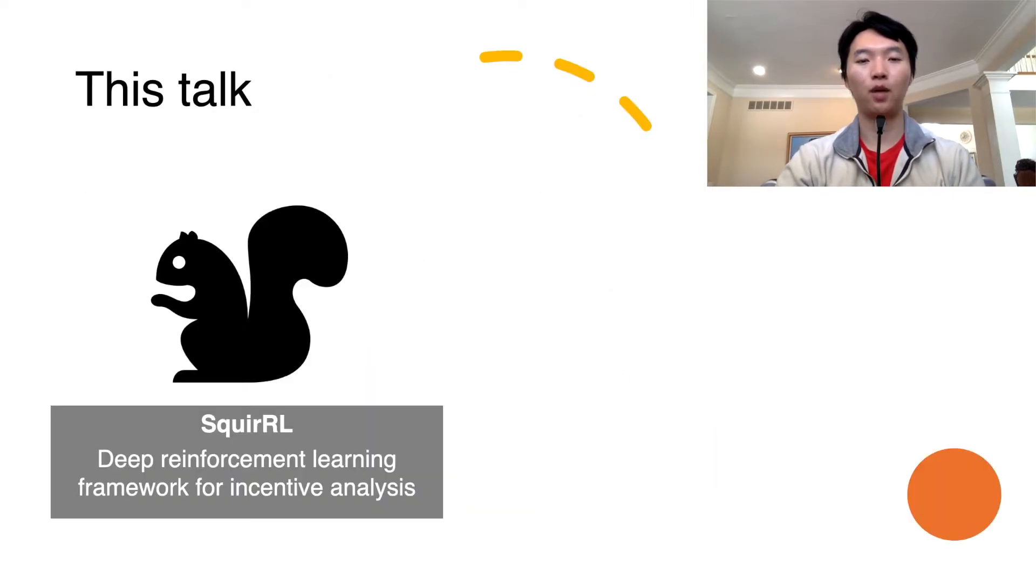Today I'll be talking about our proposed systematic approach, Squirrel. Squirrel is a framework for analyzing incentive mechanisms based on deep reinforcement learning. We demonstrate its usefulness in the following ways. First, we recover known optimal results.